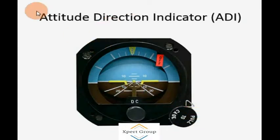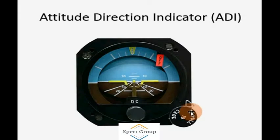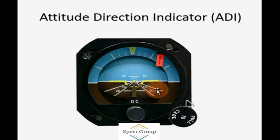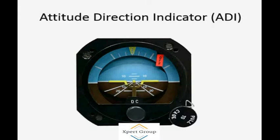There are some basic things we need to study. For example, we have the Attitude Direction Indicator — this is the basic indicator of an aircraft and a core part of the cockpit. It provides good attitude guidance for an air crew during flying. The blue part is called the horizon, the brown part is the ground, and these reference marks represent the fuselage of an aircraft. We will discuss it later in depth.